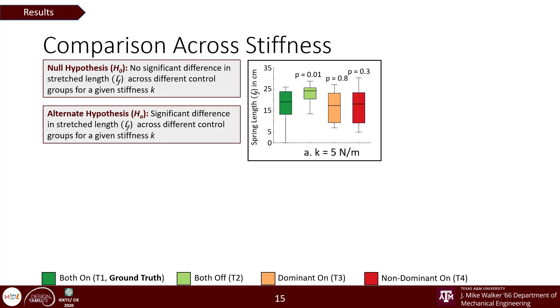For the stiffness value 5, we observed that on an average, it took a significantly longer pull, about 4 to 5 centimeters more to identify asymmetry with respect to the ground truth, and that times almost the entire spring length in the both off condition.